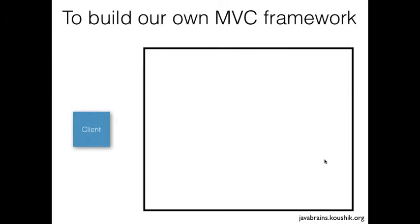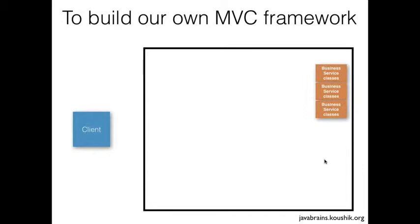The first assumption is that you have the business service classes already, because MVC focuses on the interface with the business services. The business services could be anything — they change from application to application — so you would not want to include anything related to business services in your MVC framework. The assumption is that there are classes already providing business services, either as class files or a jar. So with this assumption, what would the components of your MVC framework be? The first step would be to get the client request parameters, because a client makes a request and everything depends on those request parameters and the request URL.